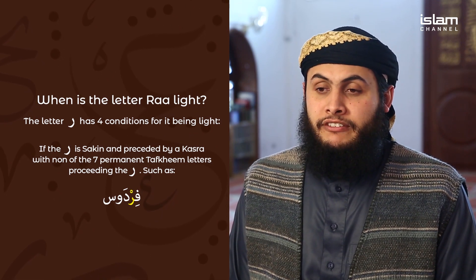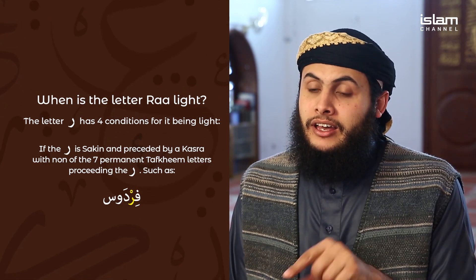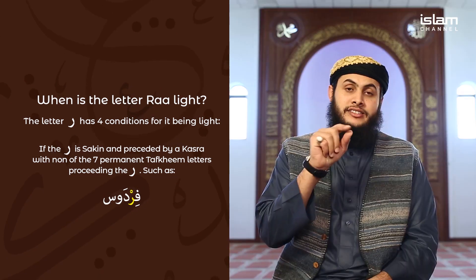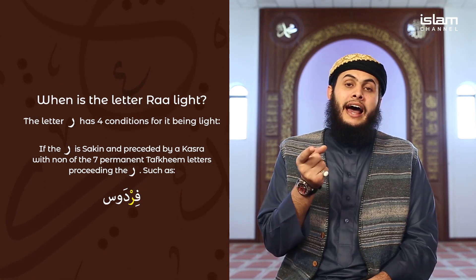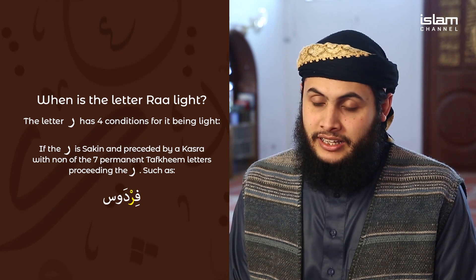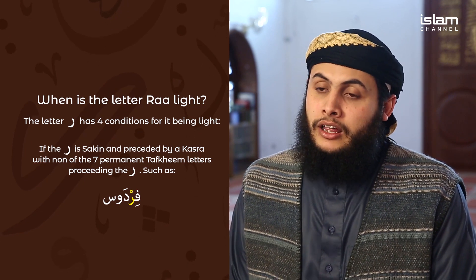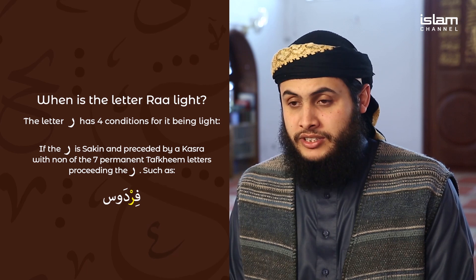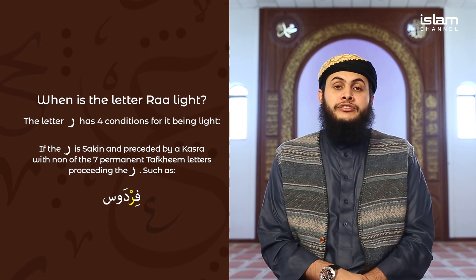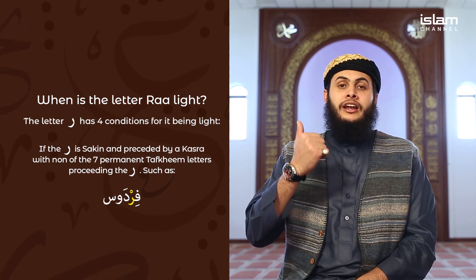The second condition for the ra being light is when we have a ra with a sukoon and the letter before it has a kasrah, however with none of the seven permanent tafkhim letters coming after the ra. An example would be 'fir'awn' — you do not say 'fur'awn'. Subhanallah, so many people fall into mistakes here — they will say 'fir'awn' or 'fur'awn', which are both wrong. You must say 'fir'awn'.